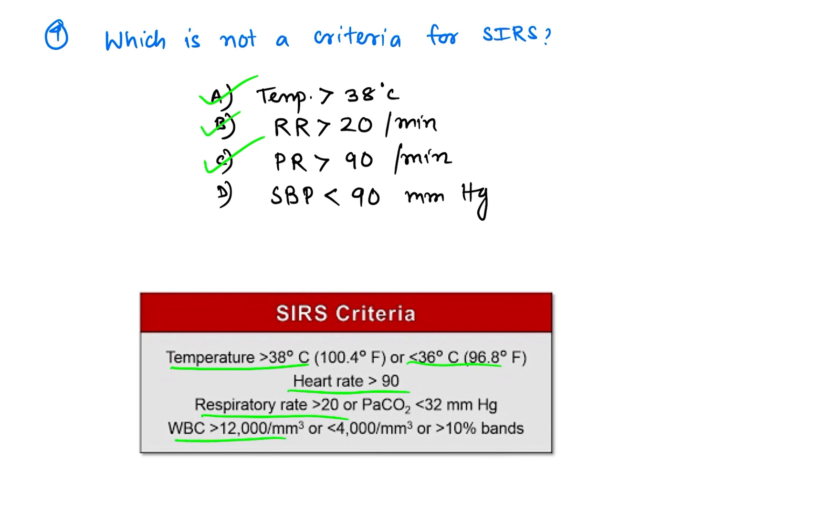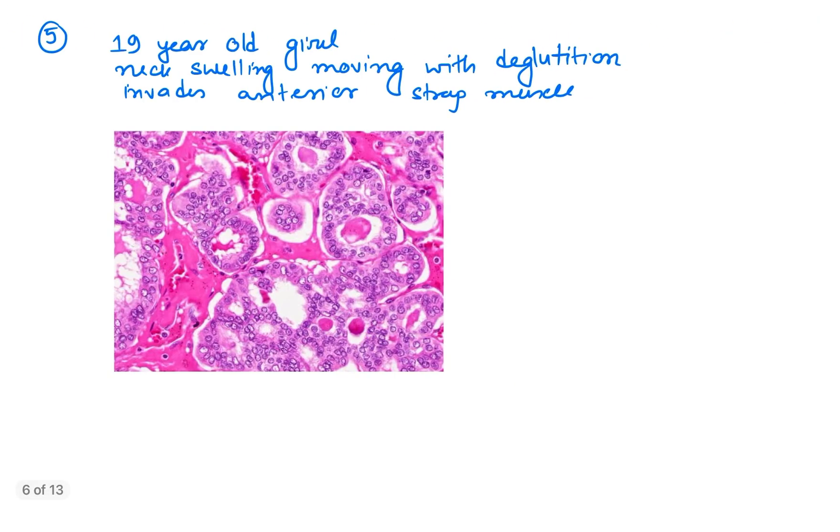And WBC either more than 12,000 or less than 4,000, this is also right. So the answer will be SBP less than 90 millimeters mercury. This is not included in the criteria for SIRS.